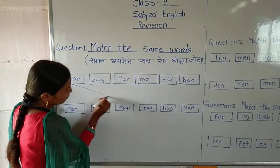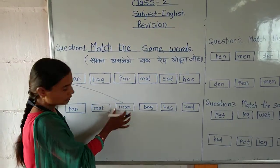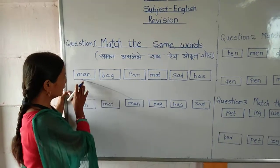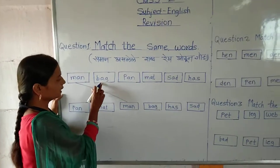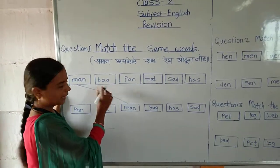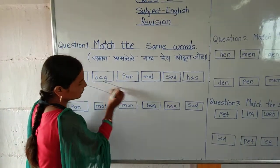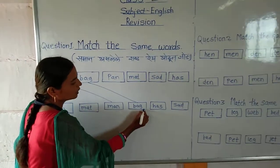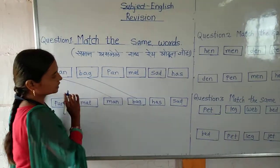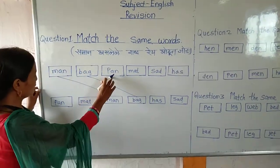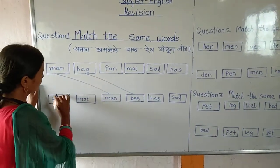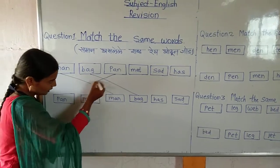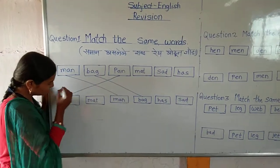Ata 'man' — haa shabda match kara. Ok, then next word: bag. Here is the bag — now we will match it. Then pan. Here is the pan word — now we will match it.